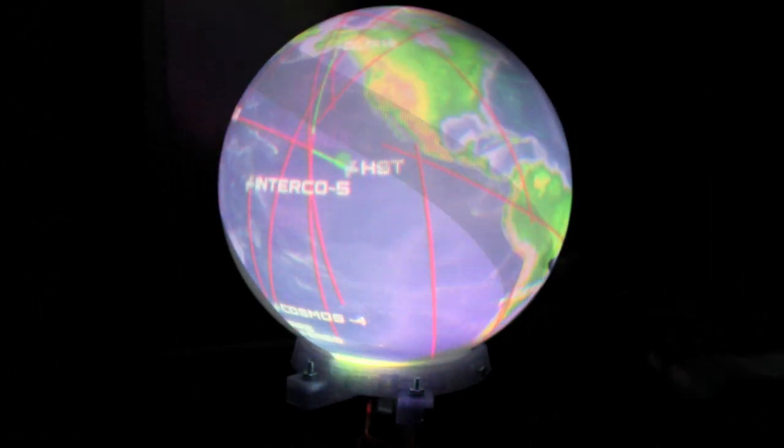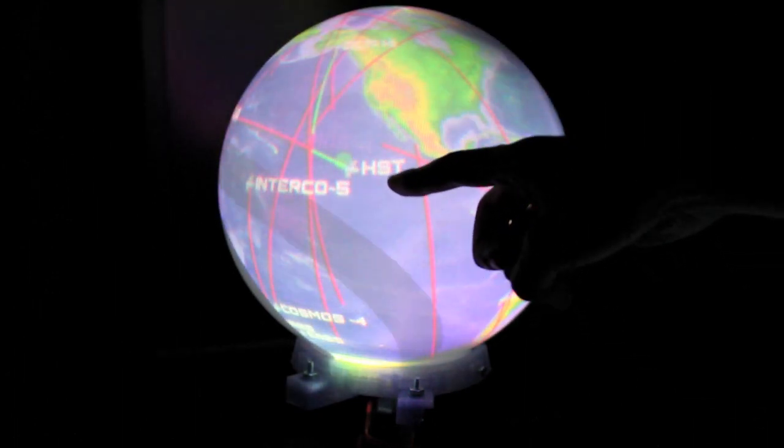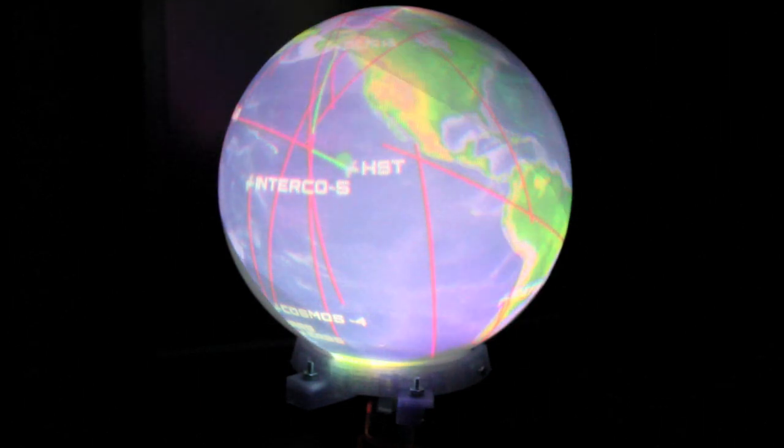You can see here the Hubble Space Telescope, labeled HST, is highlighted in green. This means that it should be visible overhead where I am right now, if I can get around the massive light pollution here.